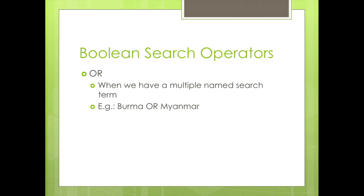OR is what we use when we have a search term that goes by more than one name. A great example of this are place names. Take Myanmar and Burma, for example — both have referred to the same area, but at different times in history. You don't want to lose the perfect example for your paper because you used one and not the other. So you can type Burma, capital O-R, Myanmar, when searching for results.